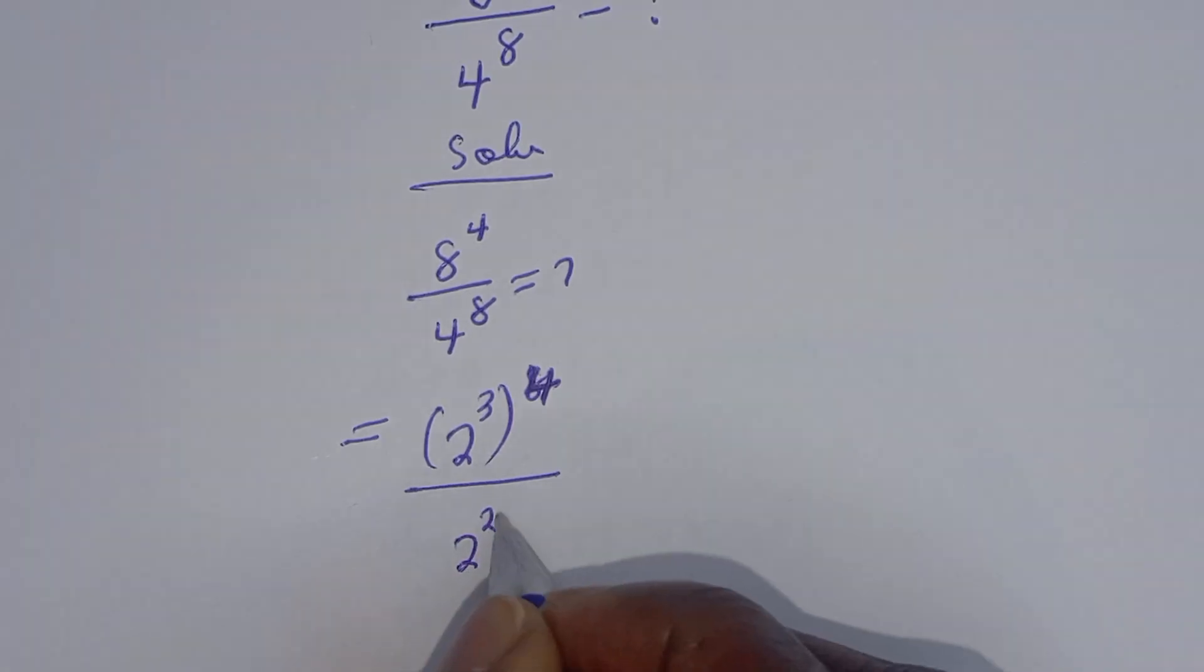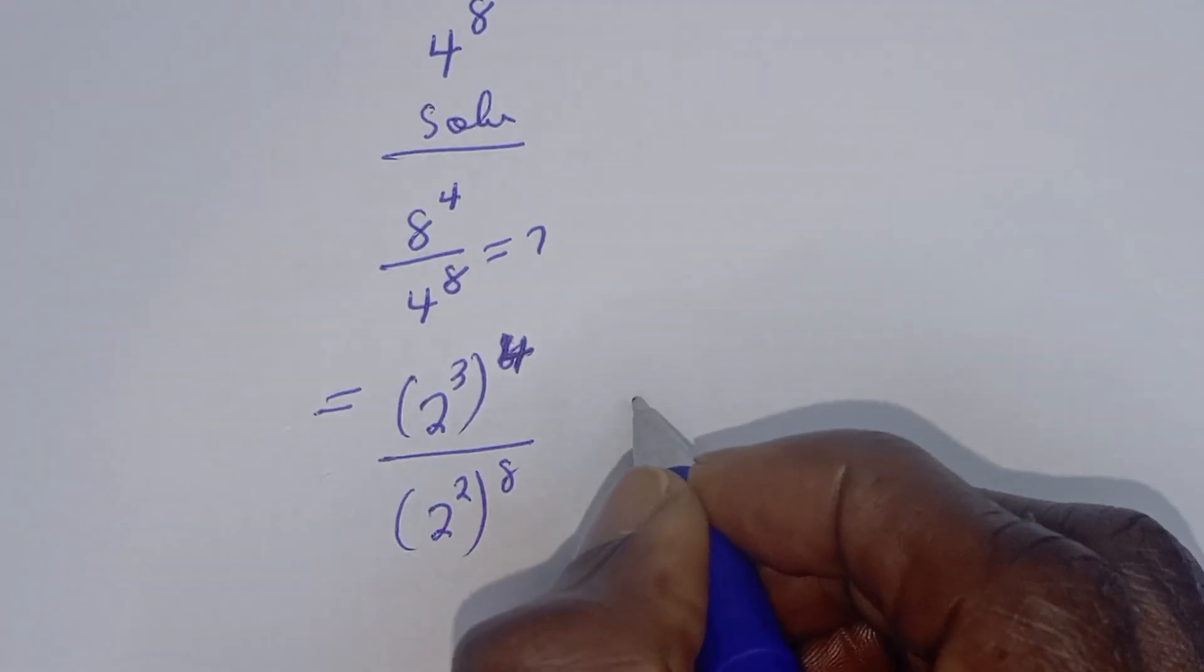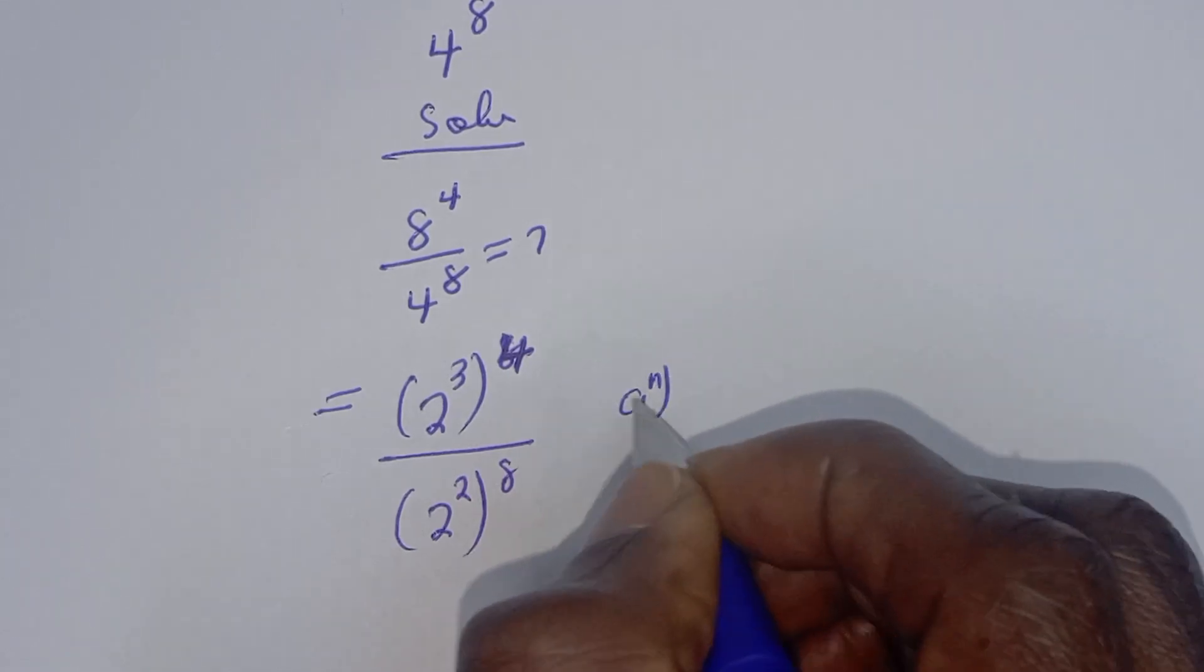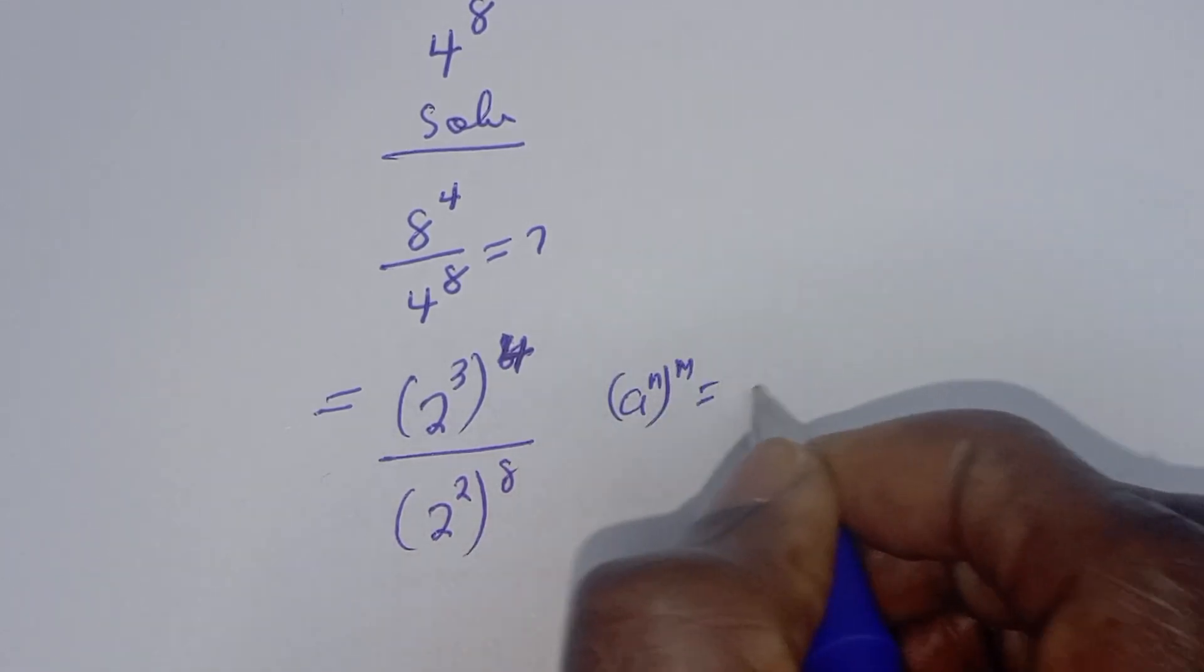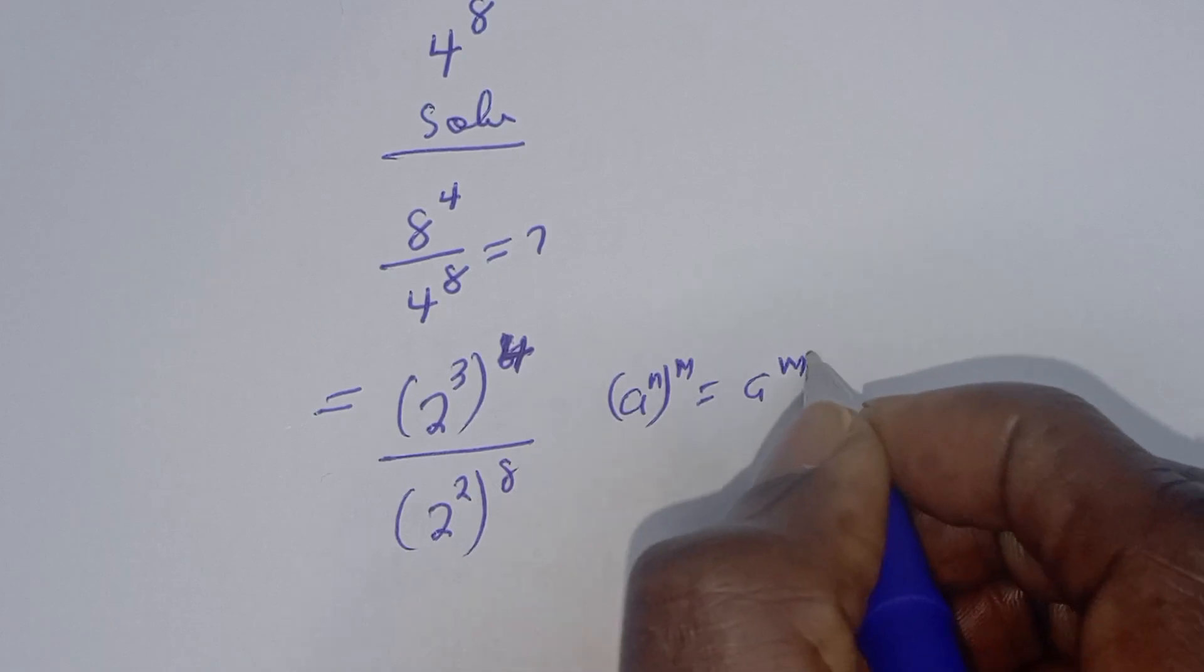Now take note of this: if you have a raised to power n to the power of m, this is equal to a raised to power m to the power of n, which is equal to a raised to power n times m.